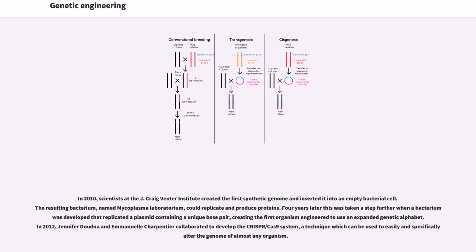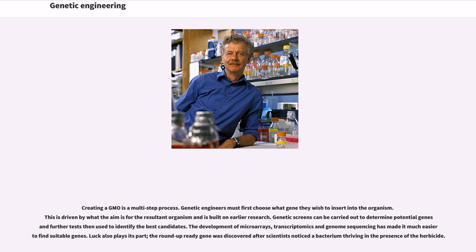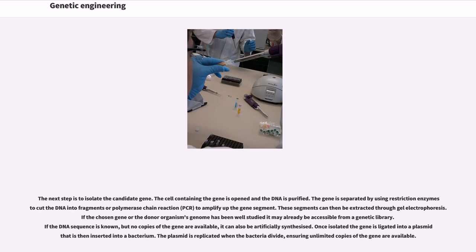Creating a GMO is a multi-step process. Genetic engineers must first choose what gene they wish to insert into the organism, driven by what the aim is for the resultant organism and built on earlier research. Genetic screens can be carried out to determine potential genes, and further tests then used to identify the best candidates. The development of microarrays, transcriptomics, and genome sequencing has made it much easier to find suitable genes. The next step is to isolate the candidate gene. The cell containing the gene is opened, the DNA is purified, and the gene is separated by using restriction enzymes to cut the DNA into fragments, or polymerase chain reaction (PCR) to amplify the gene segment. These segments can then be extracted through gel electrophoresis.